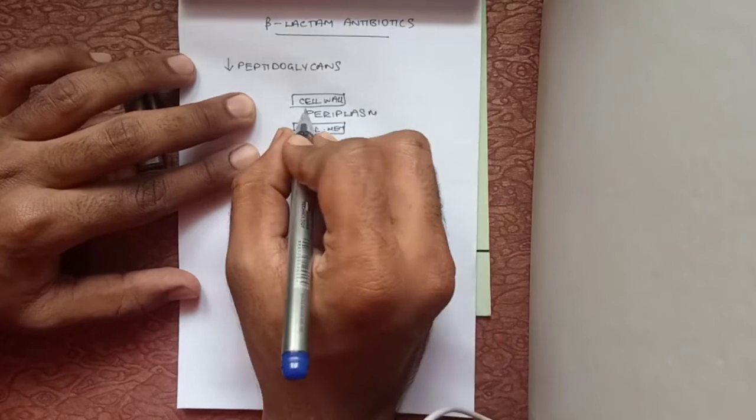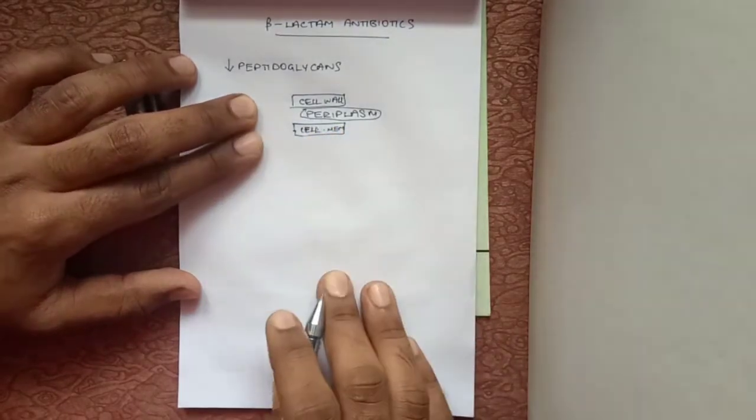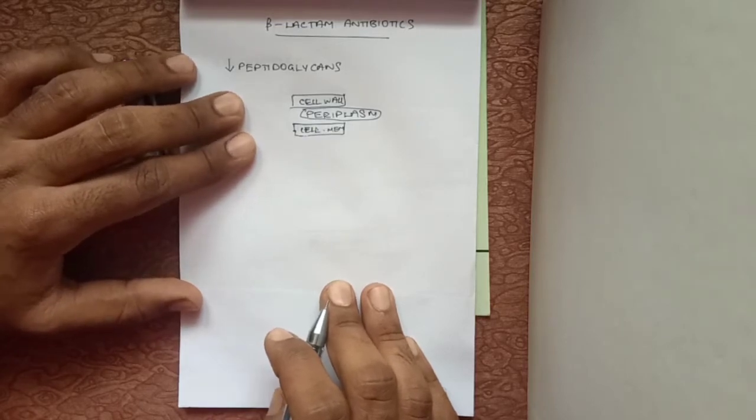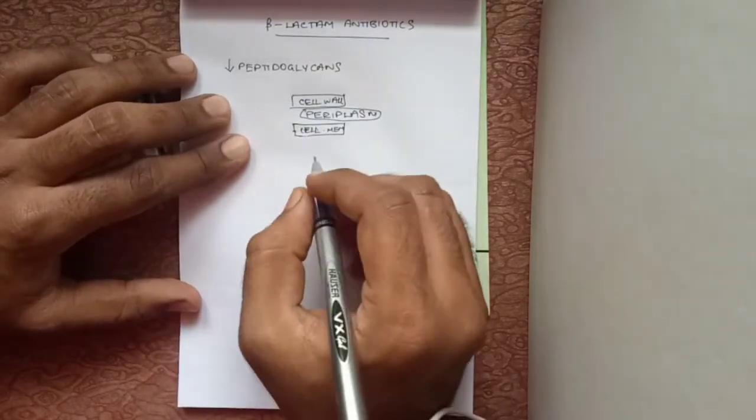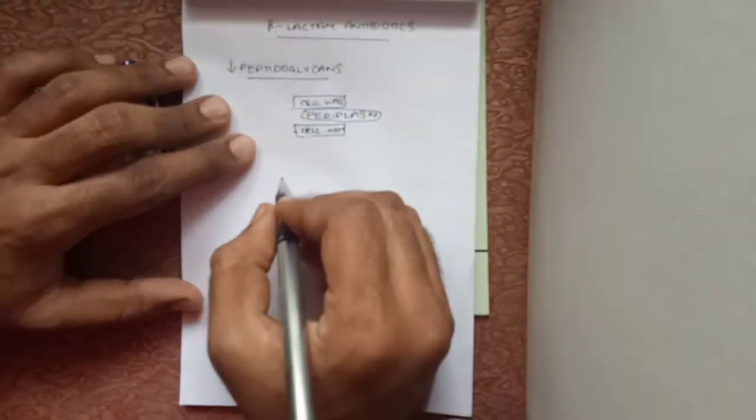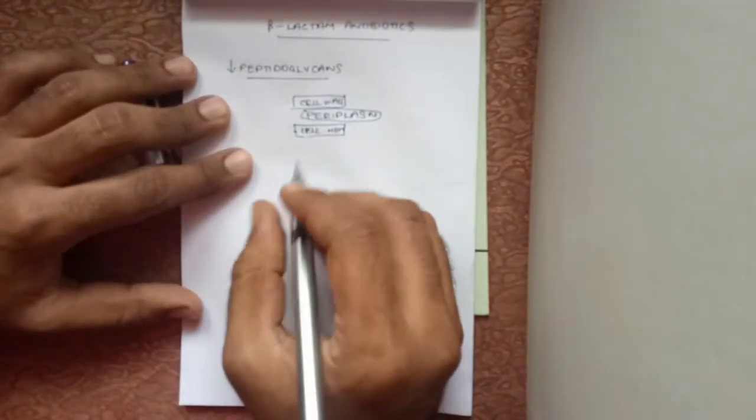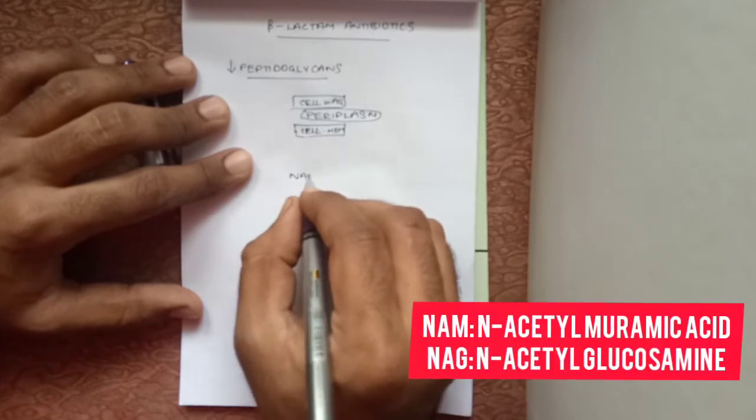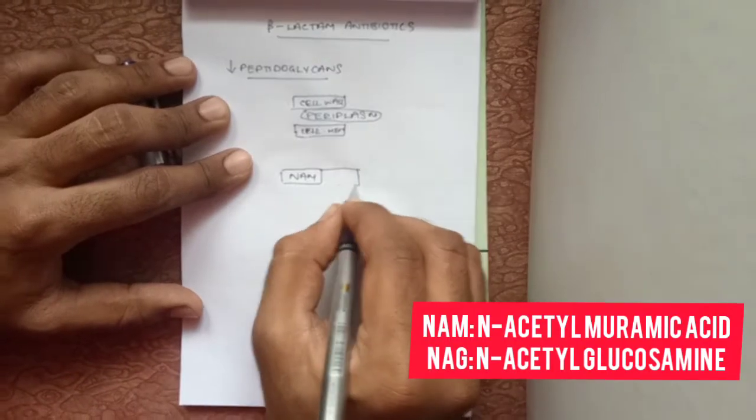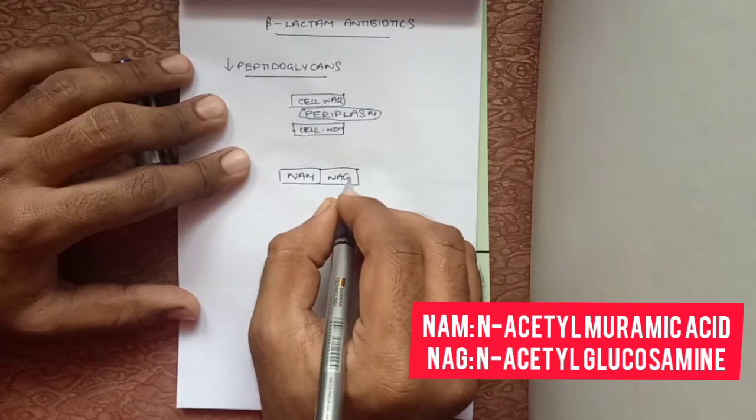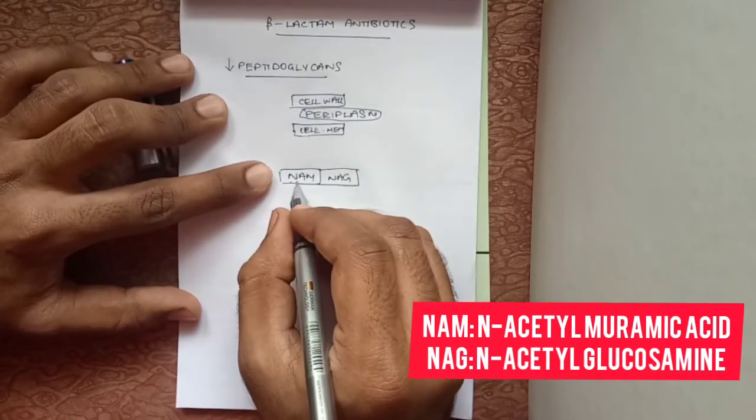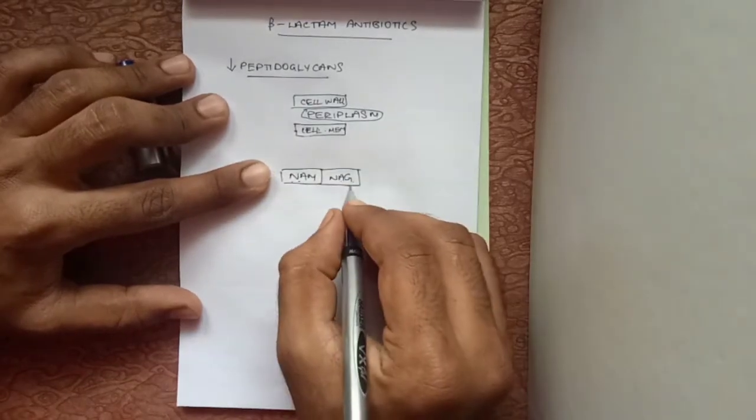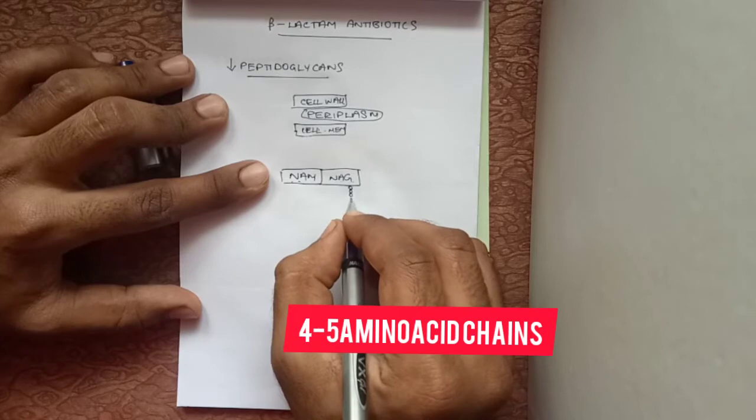This periplasm holds up the layer of peptidoglycans and forms a cell wall which is effective for the bacteria to survive. Peptidoglycans have a constituent of NAM and NAG, which means N-acetylmuramic acid and N-acetylglucosamine with four amino acid chains in it.